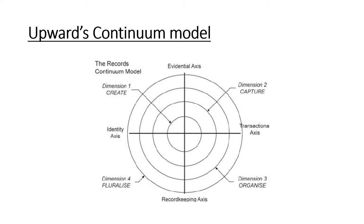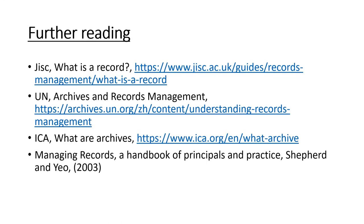An alternative is the records continuum model, which offers a more complex but nuanced account of what records are. According to this model, the steps are not discrete but continuous and not time-based in a linear fashion — for example, records can have secondary value from their initial creation. It's probably a lot to take in, but the best advice I can give is: try not to think of the stages as linear. The fundamental idea is that a record can be in two areas at once.